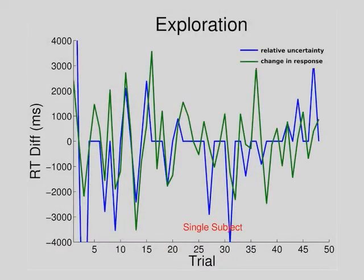We found, as we have before, that there's a subgroup of people we call the explorers who are using relative uncertainty to drive their response time adjustments. On a trial-by-trial basis, as they are more uncertain about fast responses than slow responses, there's a greater likelihood that they will explore — making a large change in response time towards fast responses — and vice versa, if they're more uncertain about slow responses they'll make an RT adjustment in that direction.